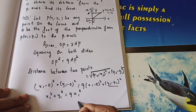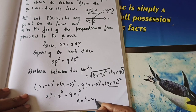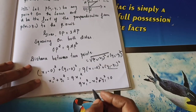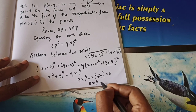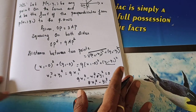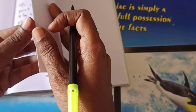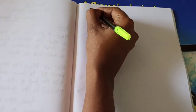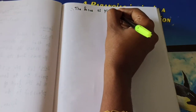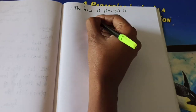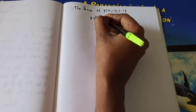Bringing terms to one side: 9x₁² − x₁² − y₁² = 0, which gives 8x₁² − y₁² = 0. We need to find the locus of point P(x₁, y₁), so replacing x₁ and y₁ with x and y: the locus of P(x₁, y₁) is 8x² − y² = 0. This is the answer.